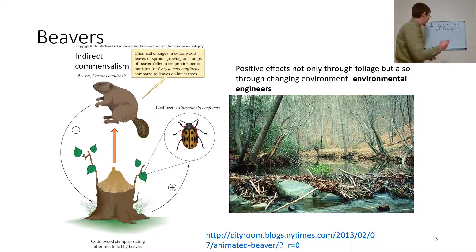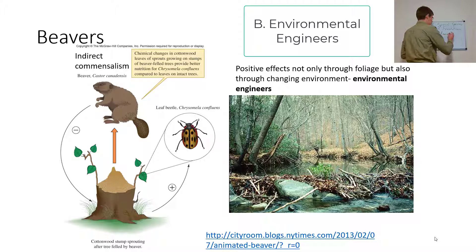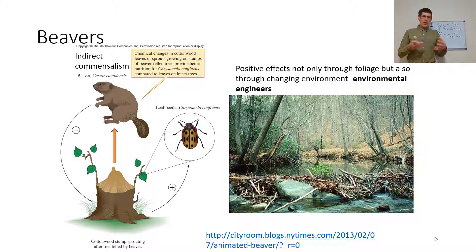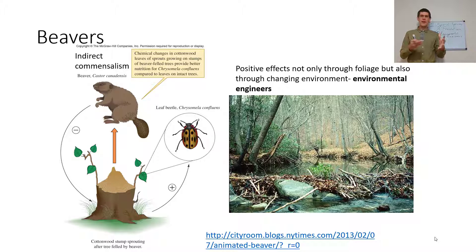Environmental engineers change the environment. By making a change in the environment, an environmental engineer is going to alter all of the interactions essentially. For example, a leaf beetle is going to be impacted by the presence of a beaver through indirect commensalism. The beaver feeds on cottonwood trees, and the cottonwood stumps produce new offshoots that have higher nutritional values. So leaf beetles are going to be more common when beavers are more common — it's indirectly commensalist. The beaver doesn't think about the beetle, but the beetle sure loves the presence of the beaver.